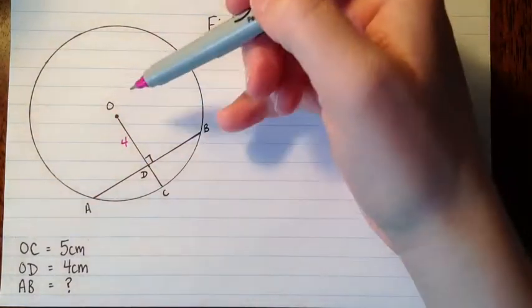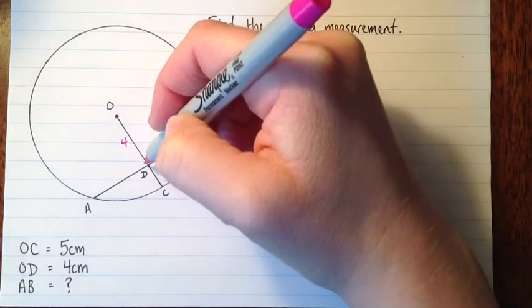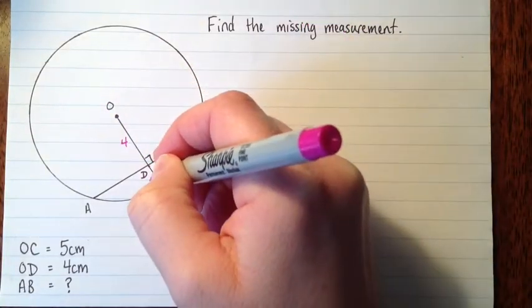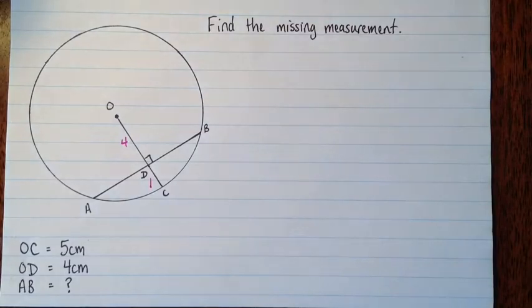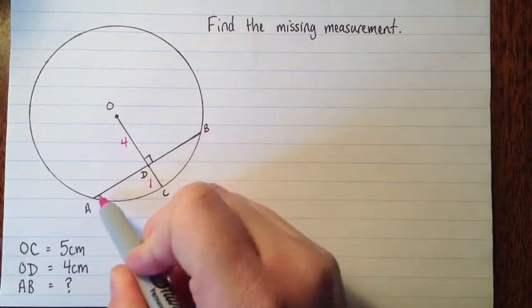And then the other thing I'll label, it just gets messy if I put that 5 on, but if this one's 4 and the whole thing is 5, then this from D to C is 1. Okay, and what we're supposed to find, the missing measurement, is how long A to B is.